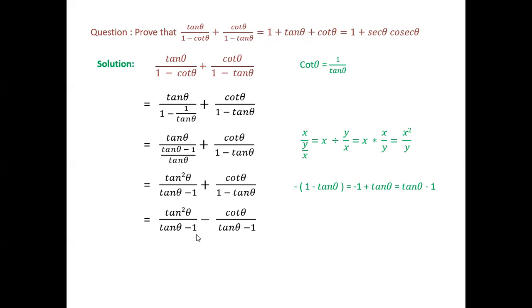So it becomes tan squared θ upon (tan θ minus 1) minus cot θ upon (tan θ minus 1). Now the denominators are the same, so the combined numerator is tan squared θ minus cot θ, all over (tan θ minus 1). Substituting cot θ = 1 upon tan θ, it becomes (tan squared θ minus 1 upon tan θ) upon (tan θ minus 1).